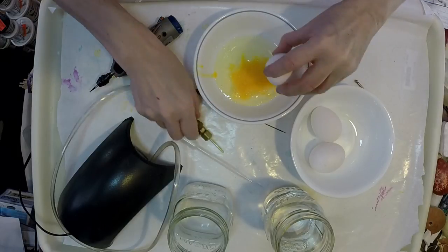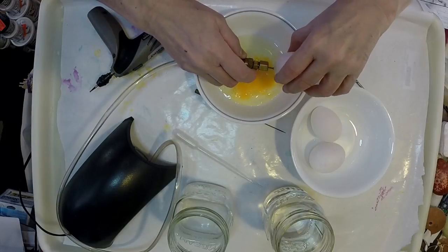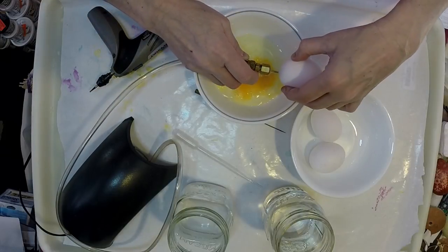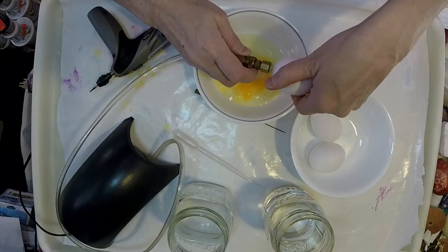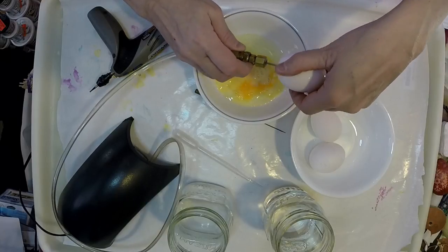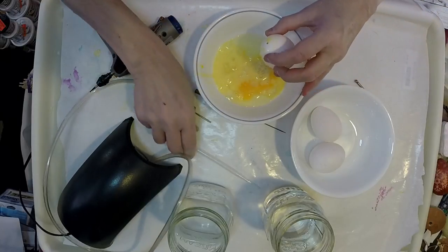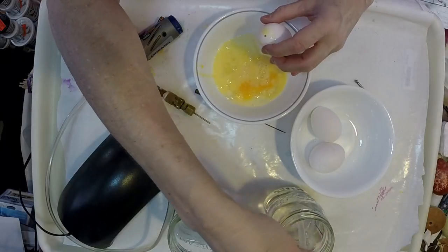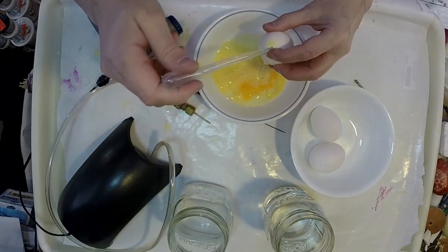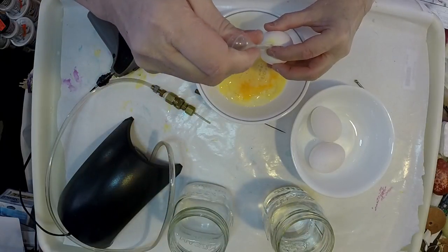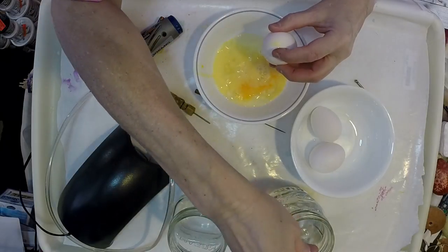After I've done the bleach solution, then I come in with the baking soda solution. The baking soda solution is two tablespoons of baking soda to one half pint of hot water. What that does is it neutralizes the bleach. So at this point, I'm going to speed up the video.